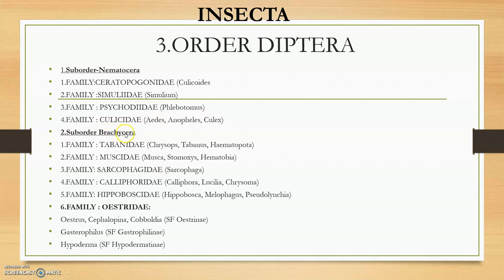The second suborder is Brachycera, with six families. First family is Tabanidae — tabanid flies, very important. Second family is Muscidae — genera include Musca, Stomoxys, Haematobia, etc. Third family is Sarcophagidae — genus Sarcophaga. Fourth family is Calliphoridae — genera Calliphora, Lucilia, Chrysomya. Fifth family is Hippoboscidae — genera Hippobosca, Melophagus, and Lipoptena.